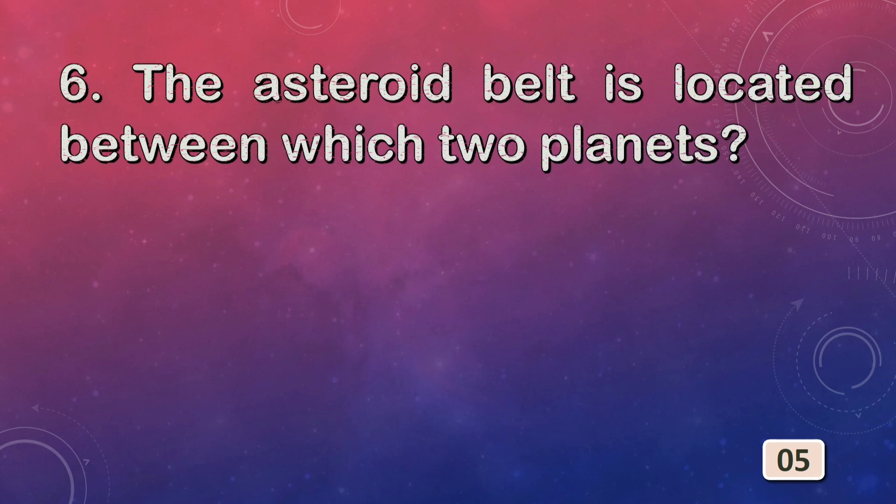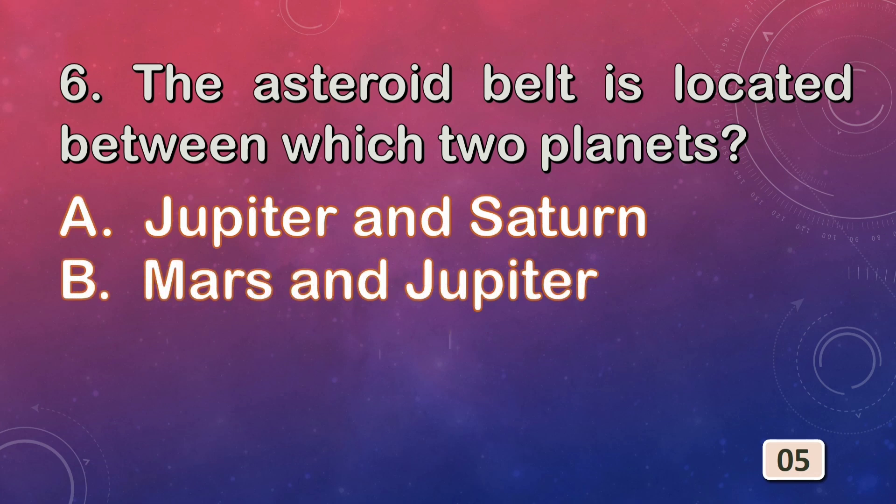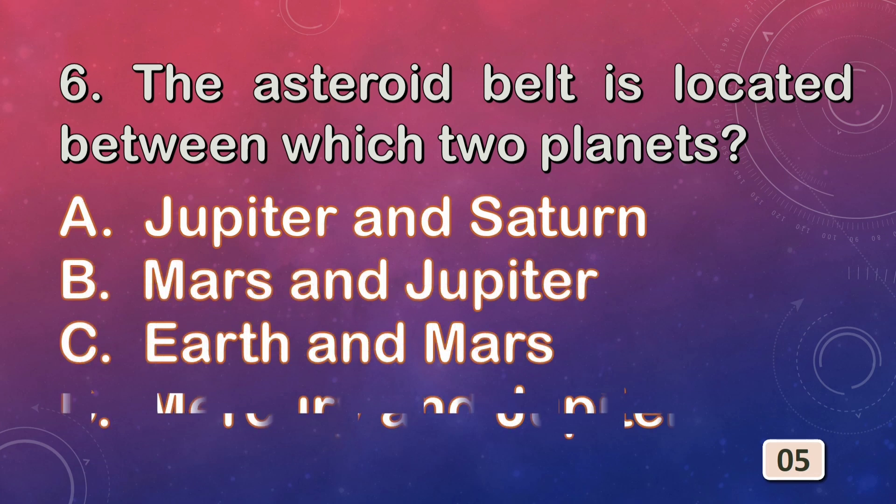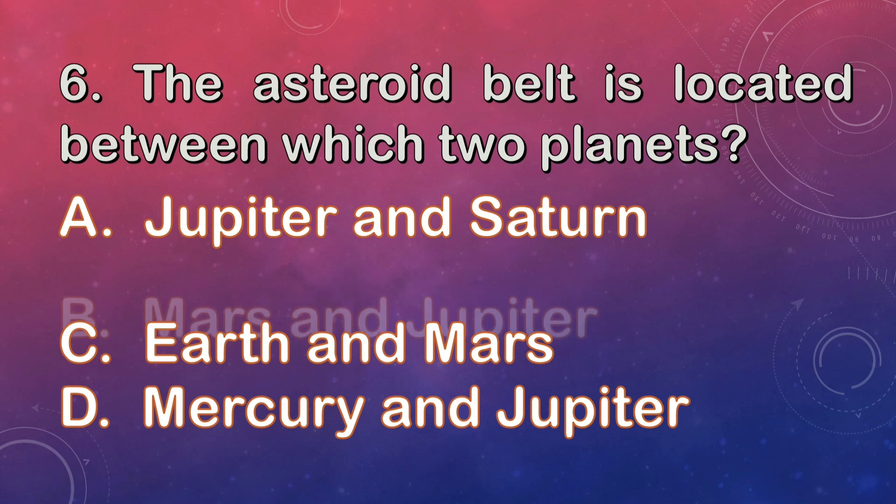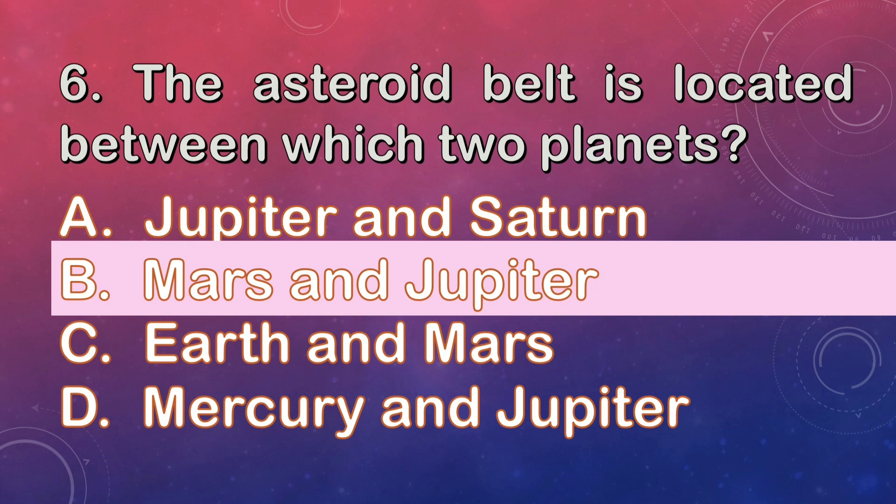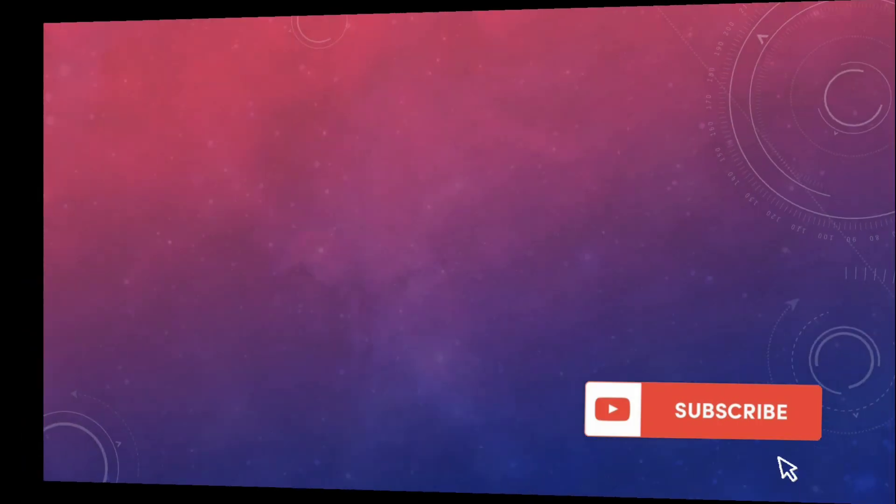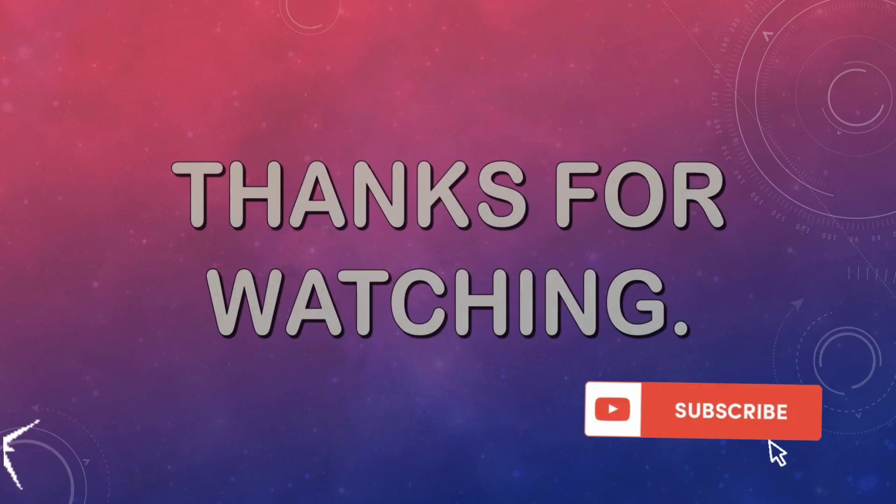Asteroid belt is located between which two planets? The asteroid belt is located between Mars and Jupiter. The right answer is option B. Thank you for watching. Please subscribe.